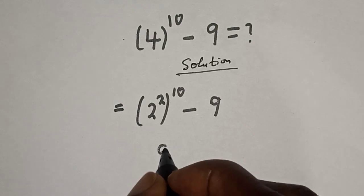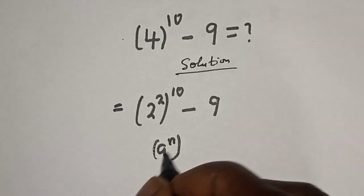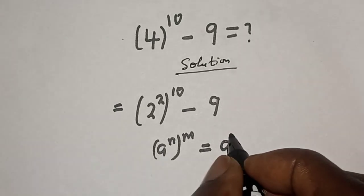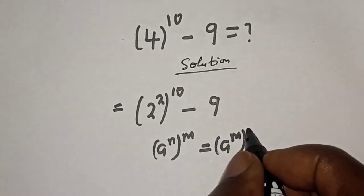Take note of this rule: if you have a raised to power n raised to power m, this is equal to a raised to power m times n.